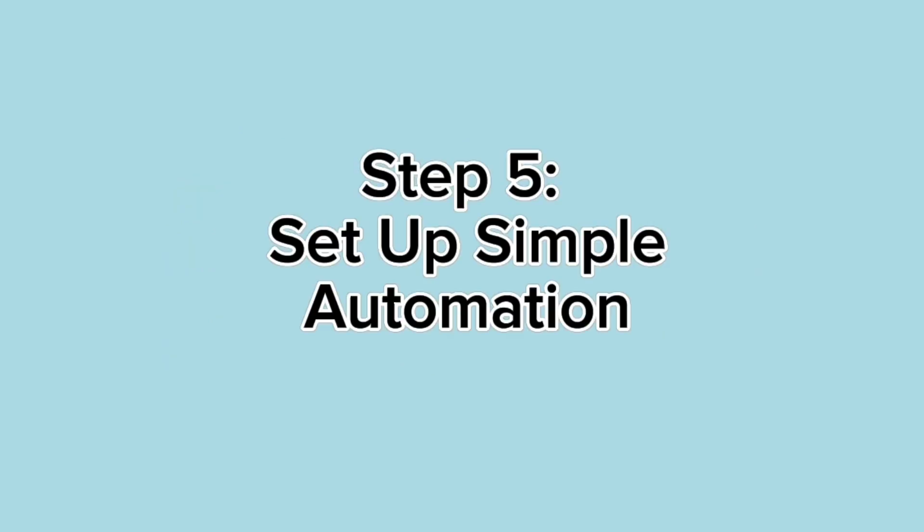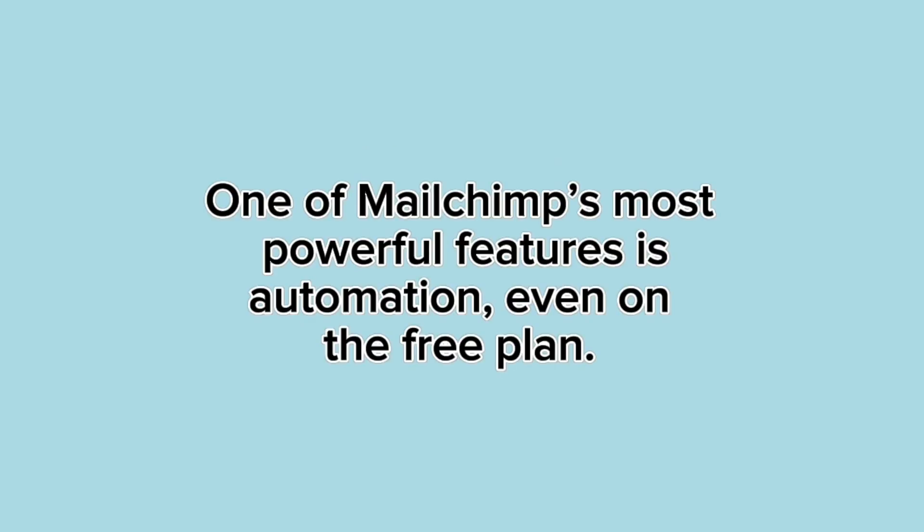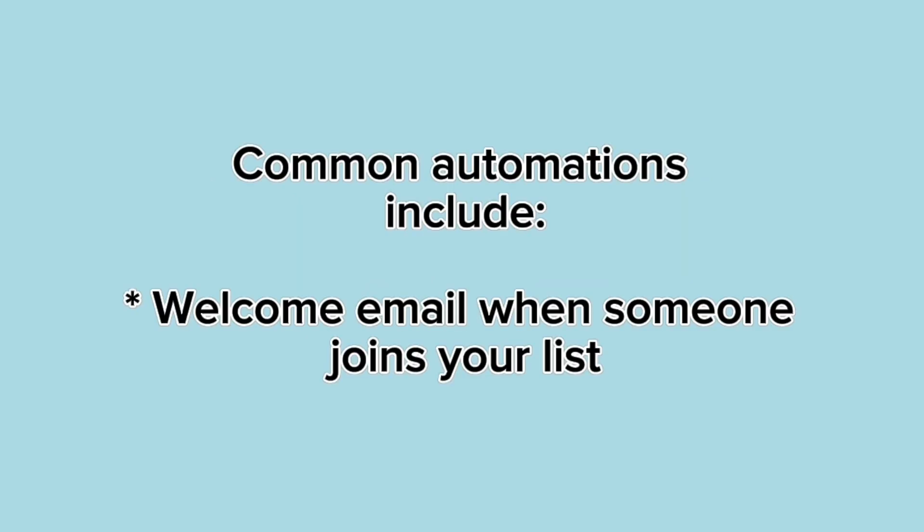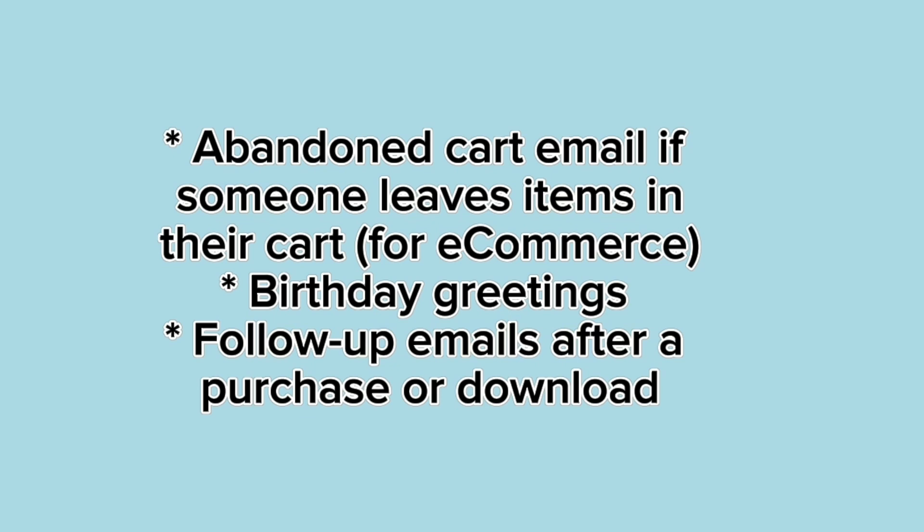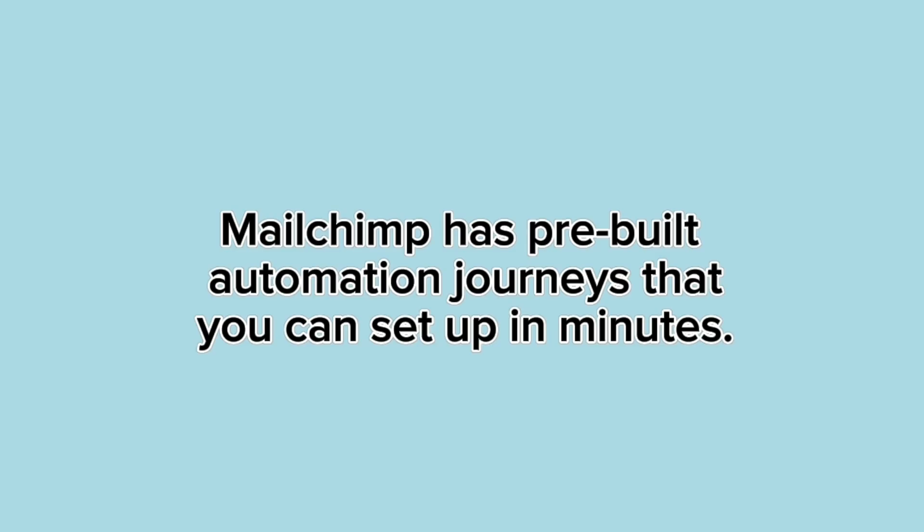Step 5: Set up simple automation. One of Mailchimp's most powerful features is automation, even on the free plan. Common automations include: a welcome email when someone joins your list, an abandoned cart email if someone leaves items in their cart (for e-commerce), birthday greetings, and follow-up emails after a purchase or download. Mailchimp has pre-built automation journeys that you can set up in minutes.